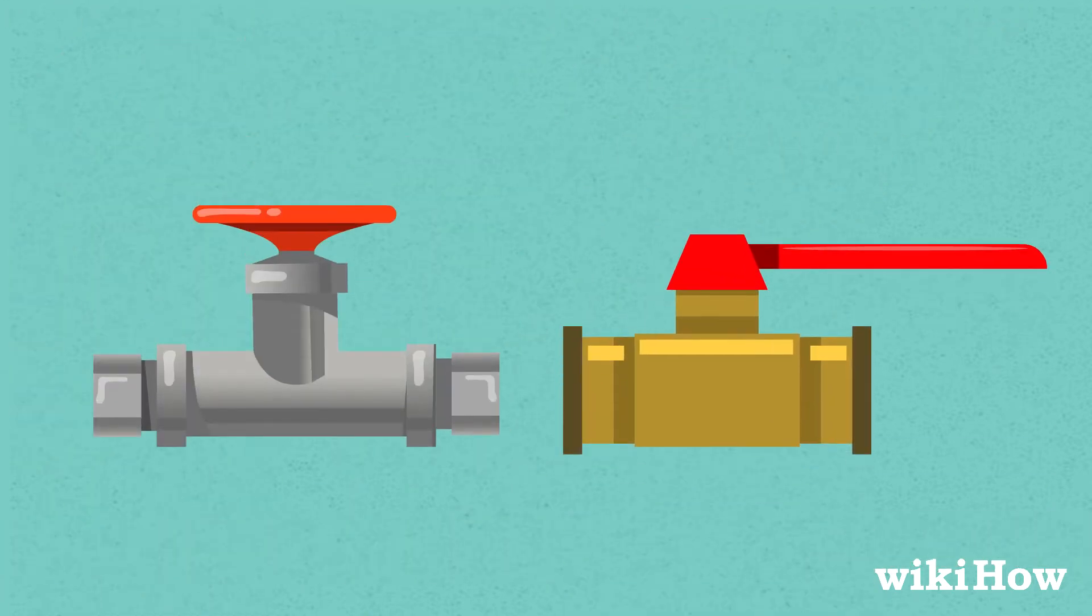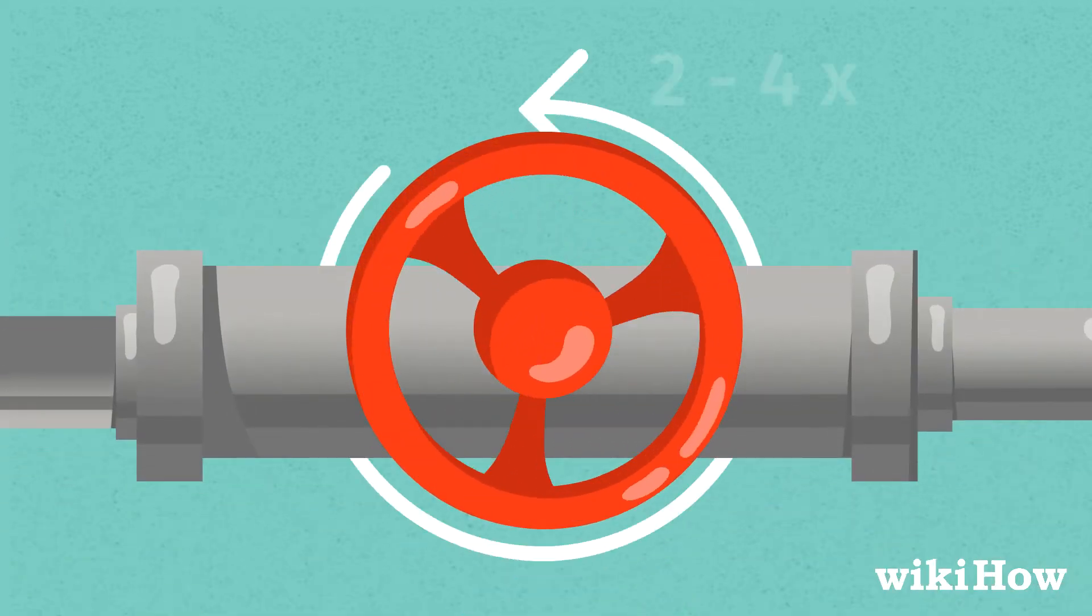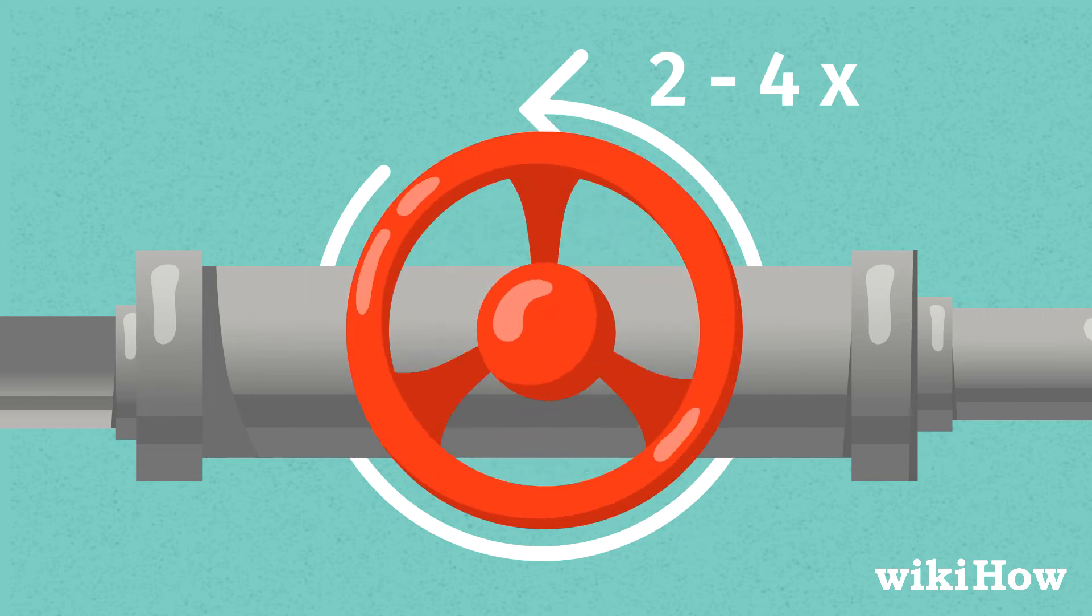It should look like a wheel or lever. If it's a wheel-shaped valve, turn the wheel two to four turns counterclockwise to open it.